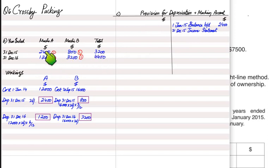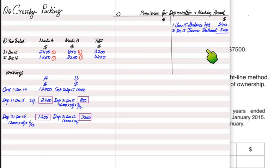The total depreciation for 2015 — combining Machine A (2,400) and Machine B (800) — is 3,200. The entry is: debit Income Statement, credit Provision account with 3,200. Opening provision was 2,400; adding 3,200 gives total provision of 5,600. The shorter side is the balance carried down (5,600), which becomes the balance brought down at the start of 2016.